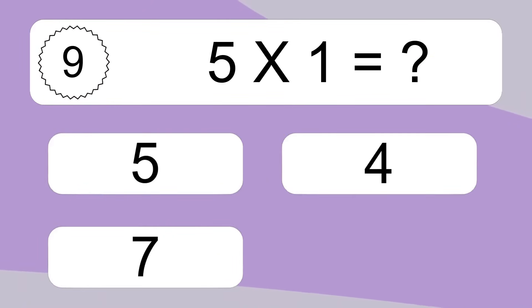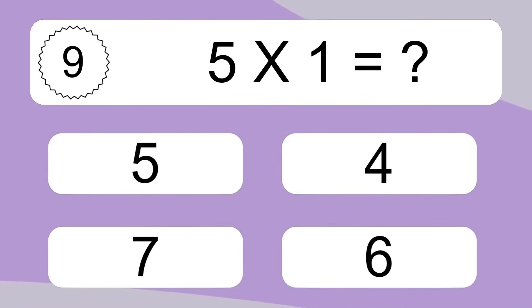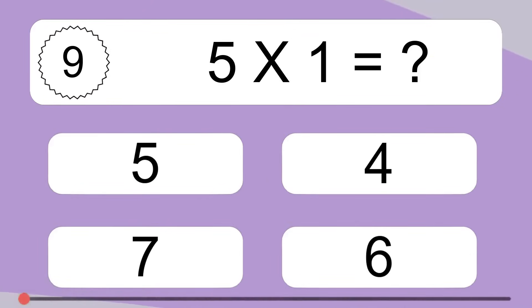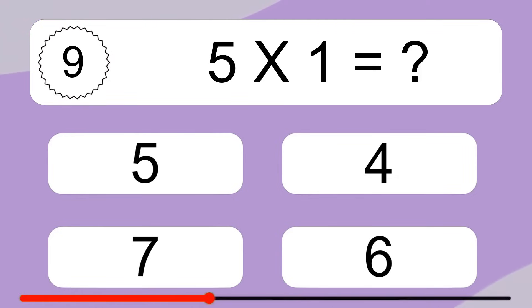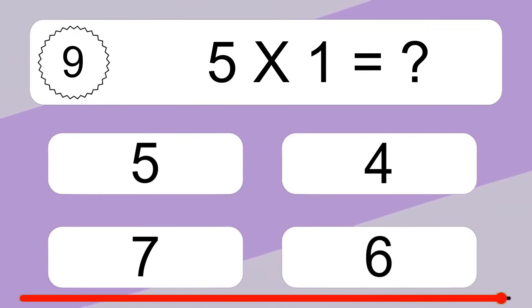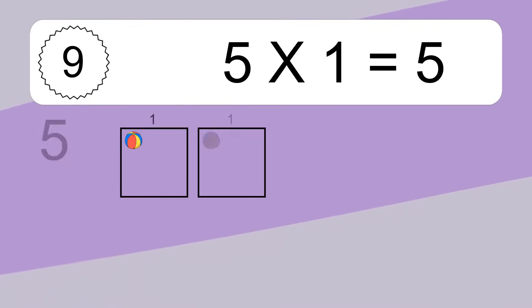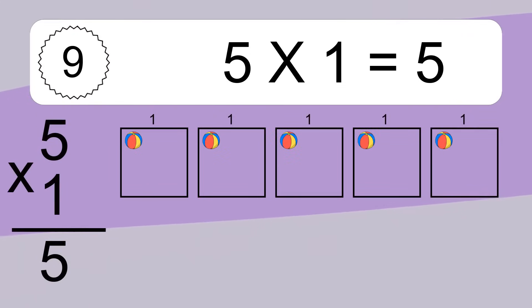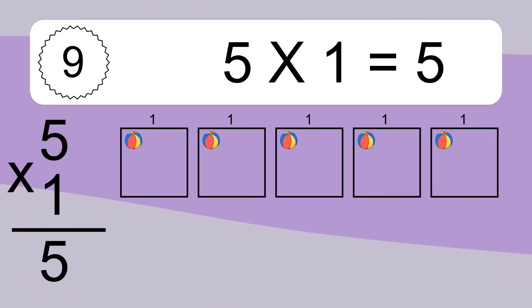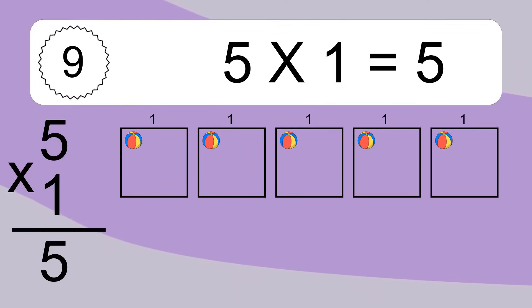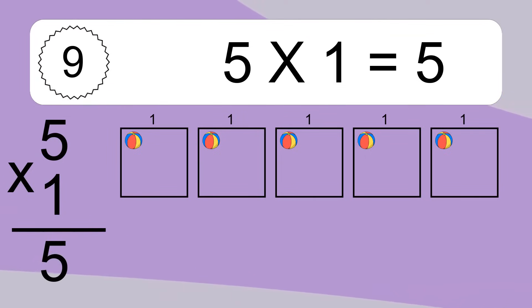5 times 1 equals what? 5 times 1 equals 5. We have 5 boxes and each box has 1 colorful ball inside. If you count all the balls in all the boxes together, you will have 5 times 1 balls. This equals 5 balls.